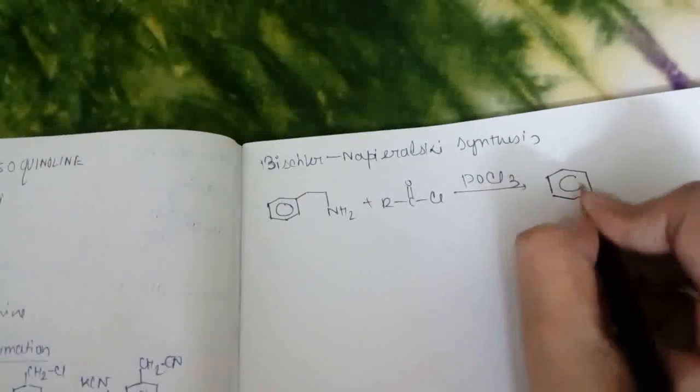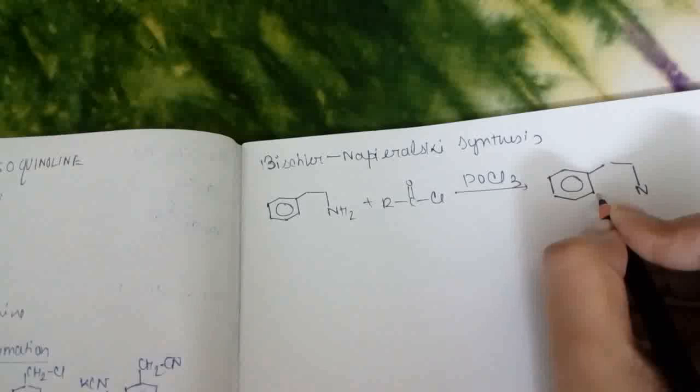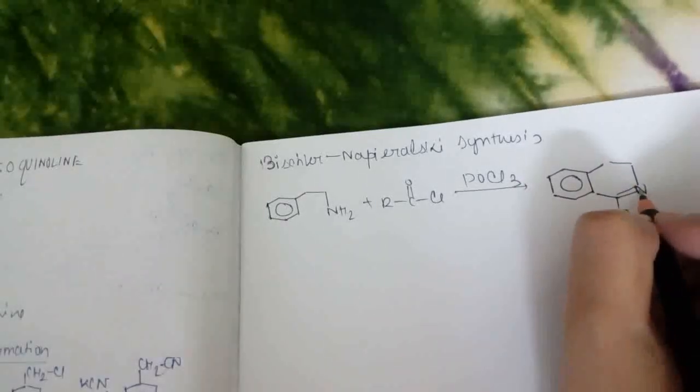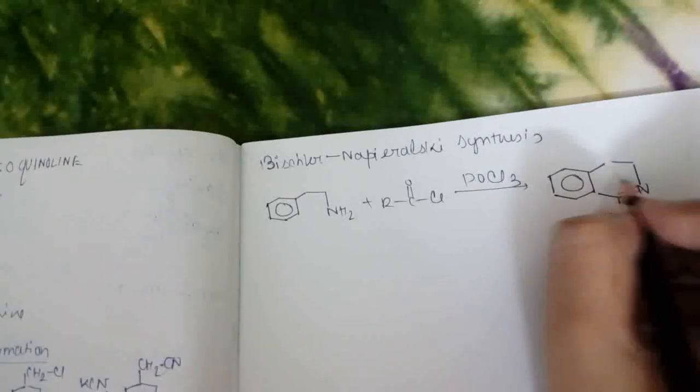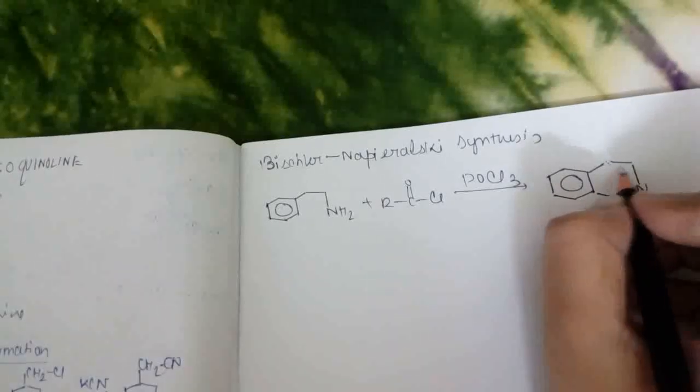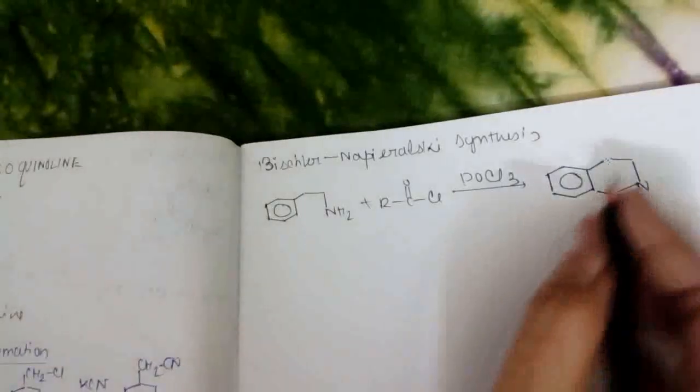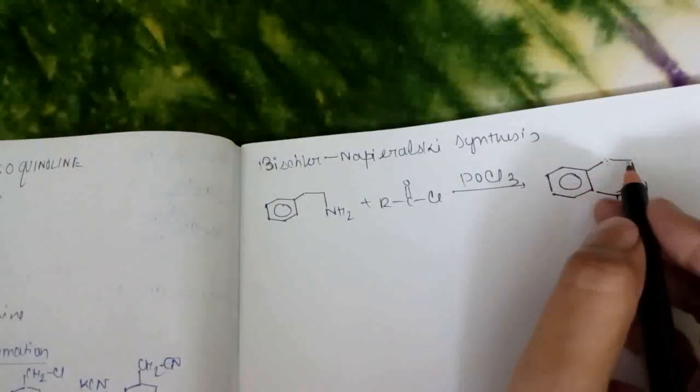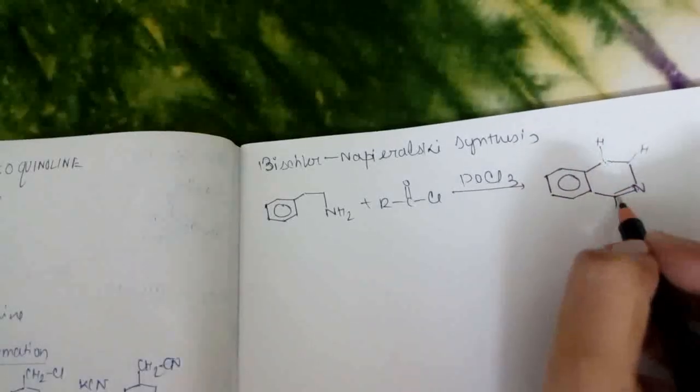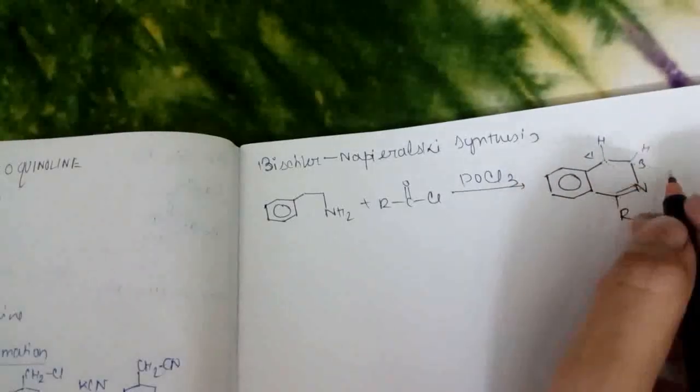That is 3,4-dihydro isoquinoline is formed. As here 1,2,3,4 - 3 and 4 positions are dehydrated, means there is no double bond, there is hydrogen present. Except for one double bond, two hydrogens are present. So this is 1,2,3,4 - 3 and 4 dehydrated isoquinoline.